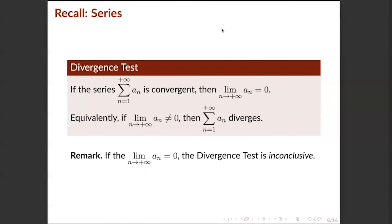Consider the harmonic series as an example. The limit of 1 over n as n approaches infinity equals zero. However, we know that the harmonic series is divergent. So always remember that the divergence test fails — it is inconclusive — when the limit of a_n as n approaches infinity equals zero.